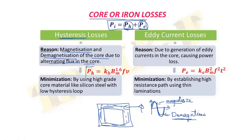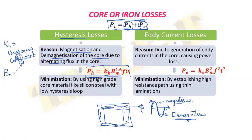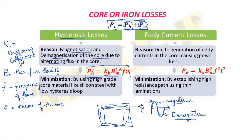The hysteresis loss is given by the expression: pH = KH × BM^1.6 × F × V, where KH is the hysteresis loss coefficient depending on the type of material used to make the core, BM is the maximum flux density, F is the frequency of the flux, and V is the volume of the core. Minimization can take place by using high-grade core material like silicon steel with low hysteresis loss, because such material has a low hysteresis loop.